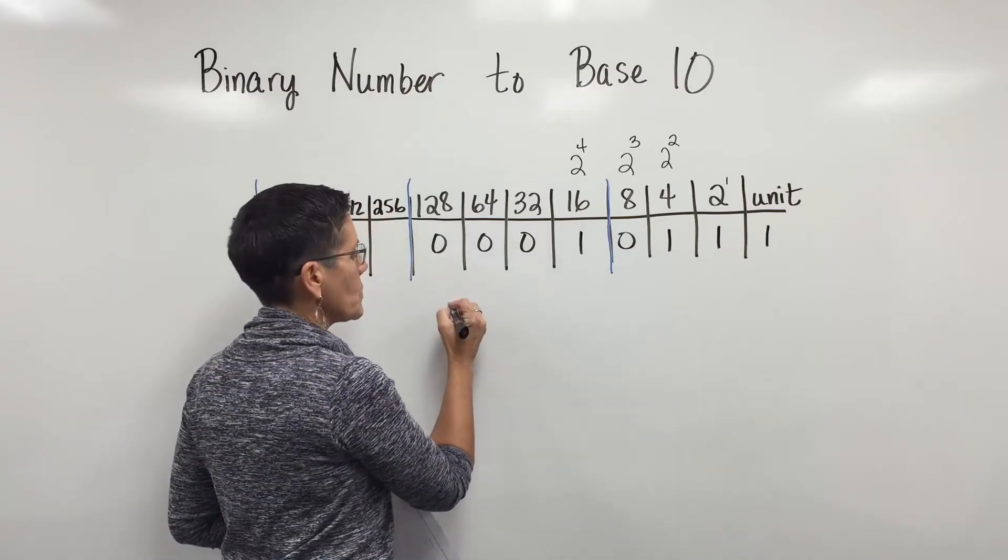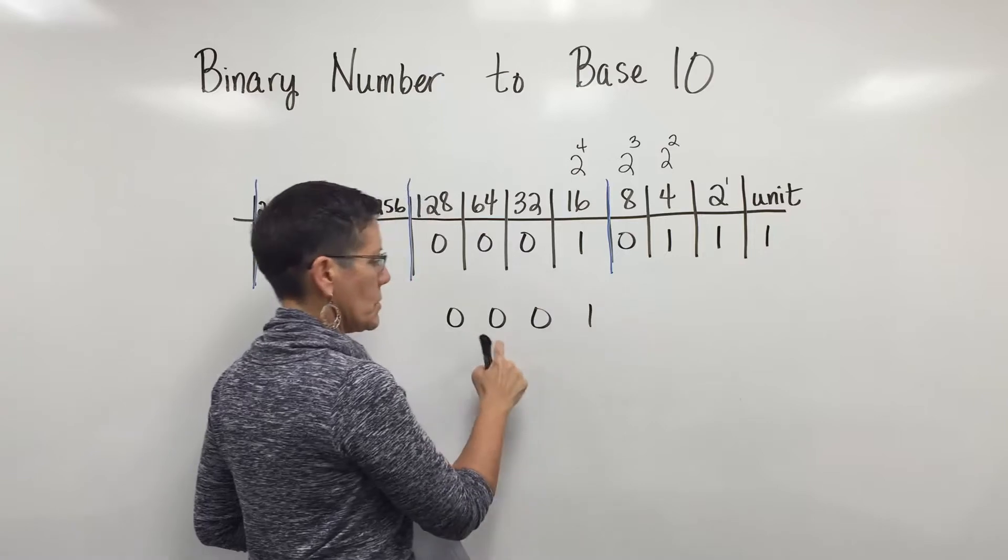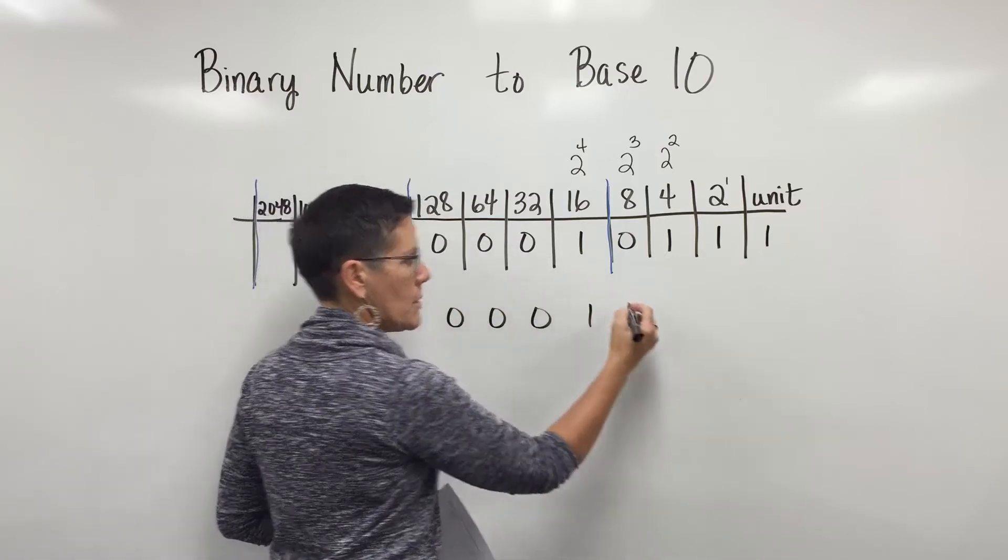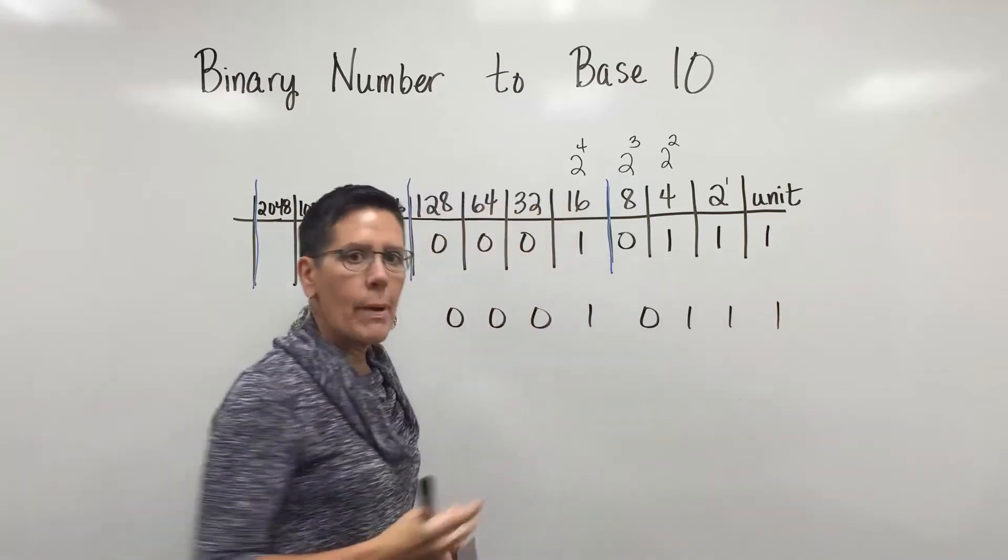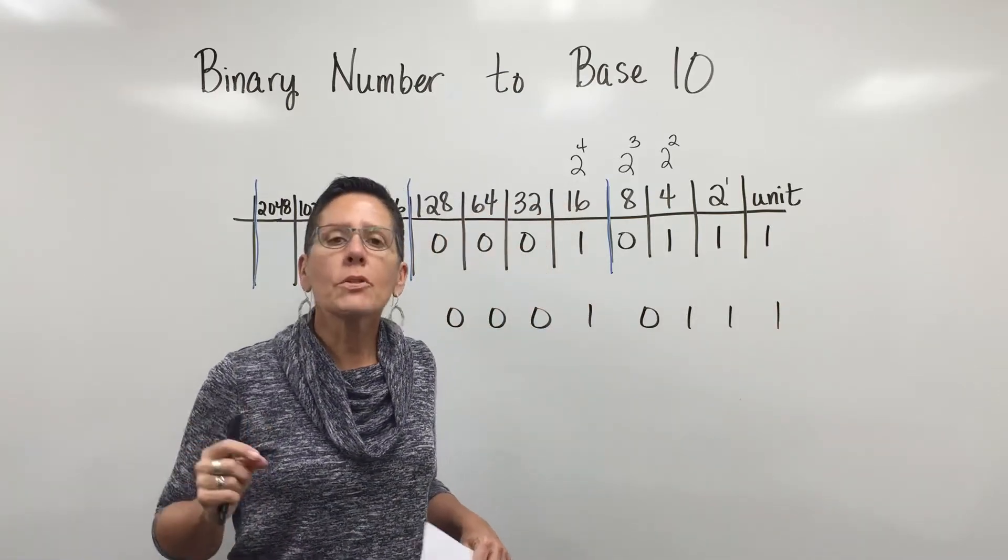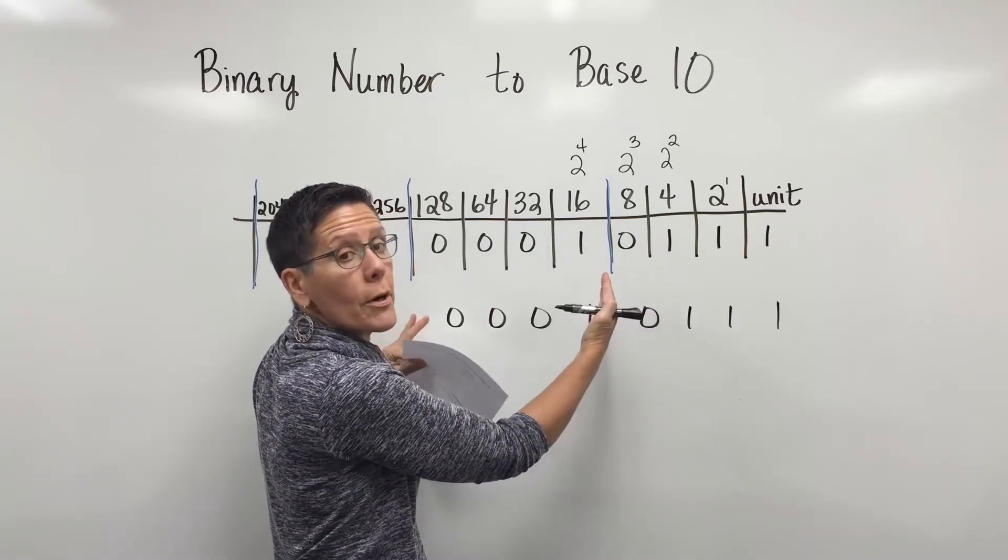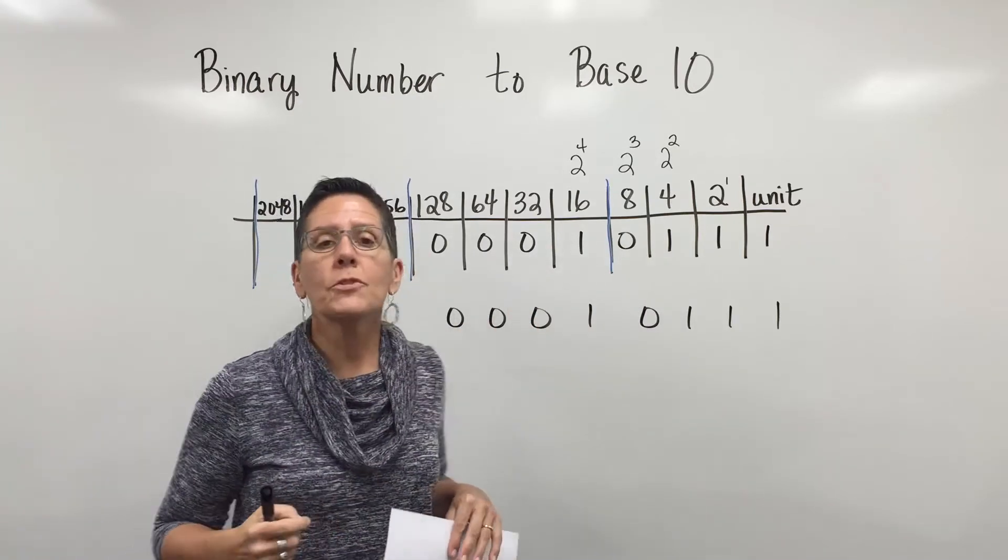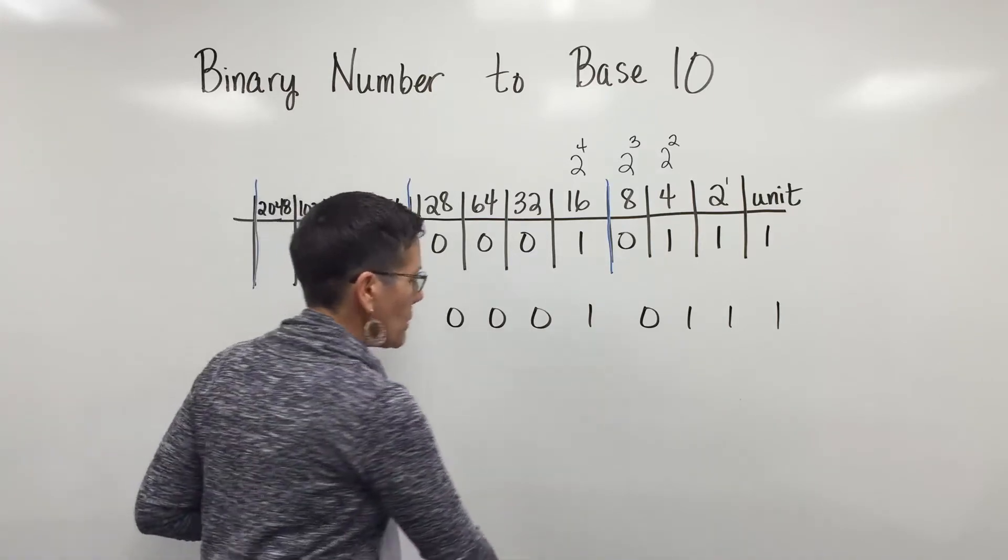Let me write this without these bars so you can see it. This number right here, 0001, and then the next four digits, 0111. A computer science student will always keep the preceding zeros for this grouping of 4 when they move to hexadecimal, which is base 16.